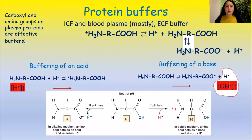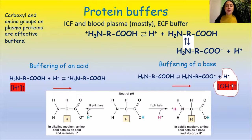Protein buffers, which mostly operate in blood plasma, act as buffers because of their amphoteric nature — they have carboxyl groups with acidic properties and amino groups with basic properties. So if concentration of H+ ions increases, amino groups accept H+ ions and their concentration decreases. If concentration of OH- ions increases, H+ ions produced by dissociation of carboxyl (–COOH) functional groups combine with OH- ions, producing water molecules.